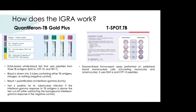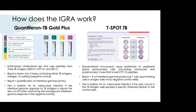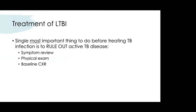The T-SPOT is slightly different — it's an enzyme-linked immunospot assay performed on peripheral blood monocytes and lymphocytes, using a well plate. The result is the number of interferon-gamma-producing T cells, which produce purple spots that are counted. The test is positive when spot counts in the TB antigen wells exceed a specific threshold relative to control wells. Unlike QuantiFERON, the T-SPOT includes a borderline or indeterminate category.